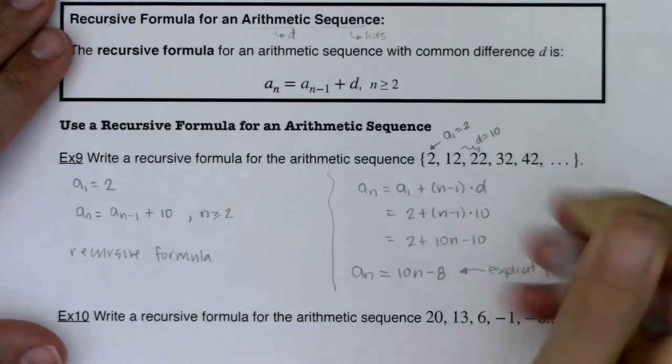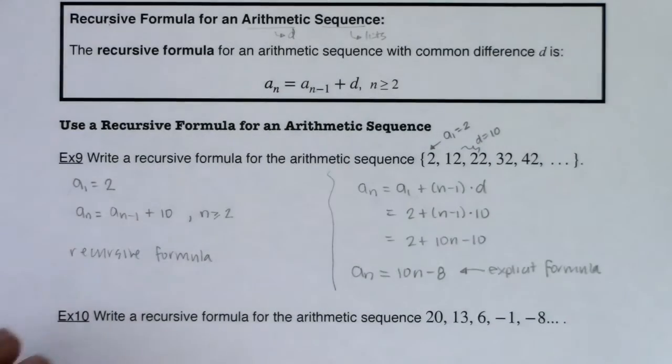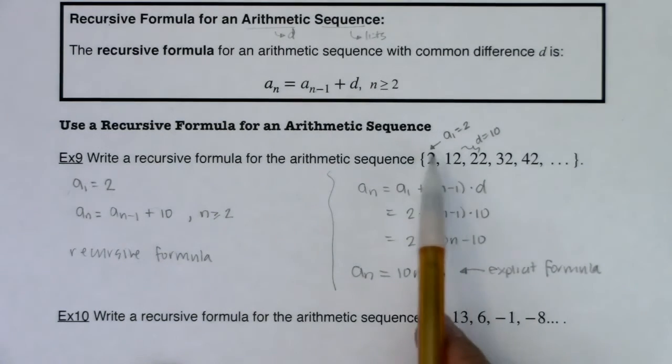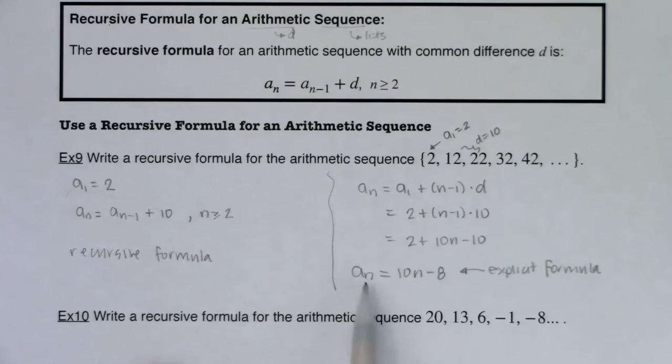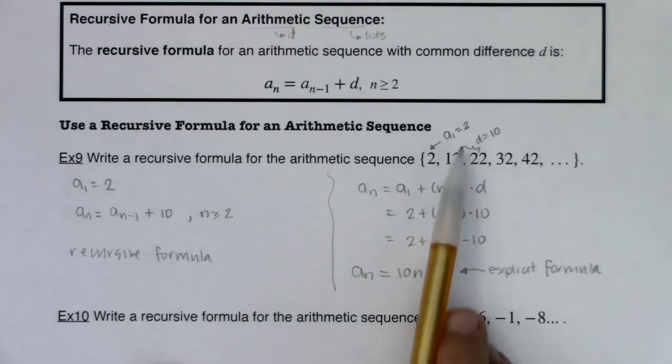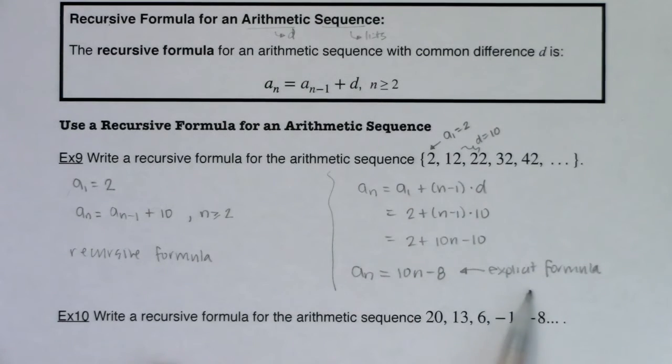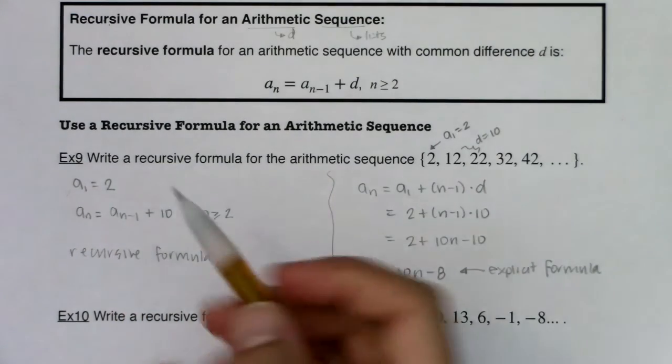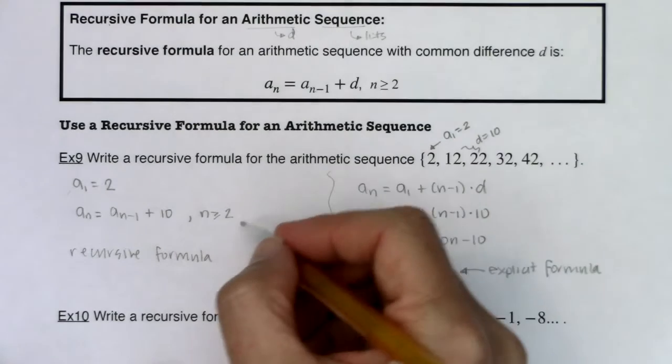And I just want us to start talking about how both of these are working. Alright, if I was going to plug in n equaling 1 here, 10 times 1 is 10, 10 minus 8 is 2. Great. So that is working. But let me show you how this works here. If we were going to plug in n equaling 1, I go to my first term. Right? So a sub 1 is 2.